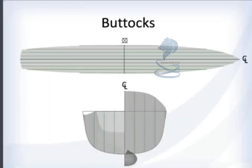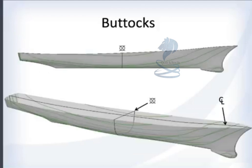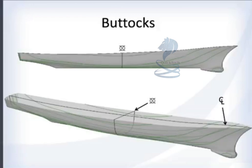If you take the center line plane and make copies sent port and starboard, you get what are called buttock lines. From the top and from the front or back you get straight lines, but from the side or oblique view you get contours showing how the hull changes from port to starboard. Like pressure lines on a weather map, the closer the buttock lines are, the more curvature there is; the farther apart they are, the less curvature.